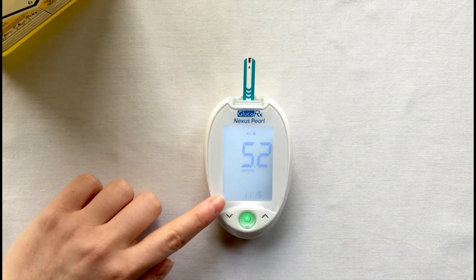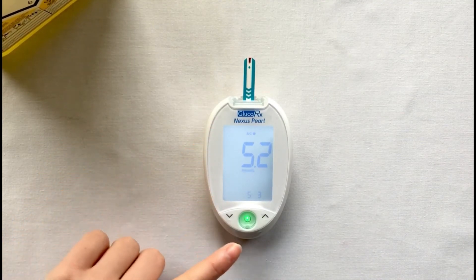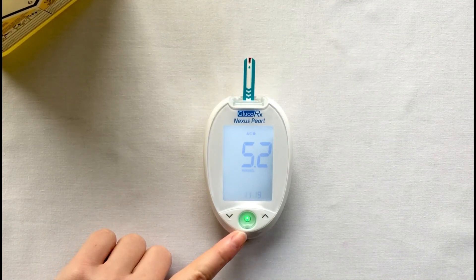If your reading has fallen within your specified range the middle button will turn green. However if your result has fallen out of the range the middle button will turn red.